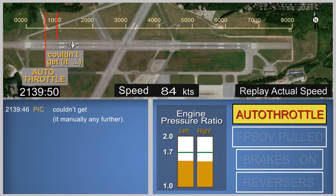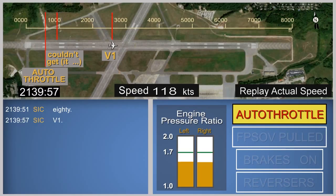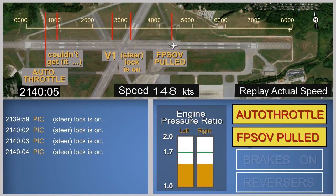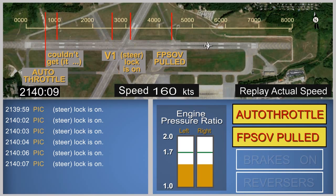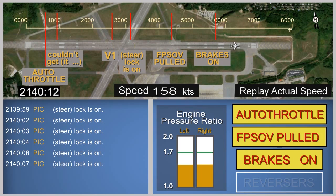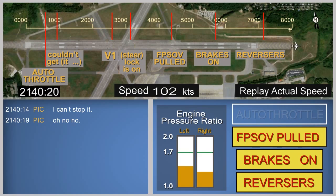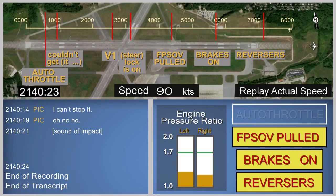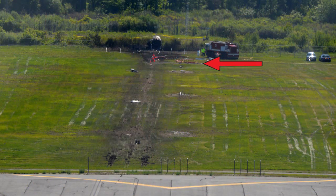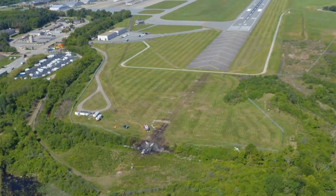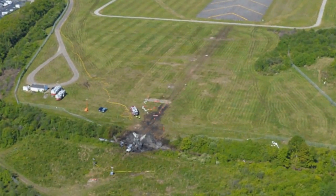The second in command called out that the airplane had reached a speed of 80 knots, then stated the airplane had reached takeoff decision speed, V1. One of the pilots activated the flight power shutoff valve, likely in an attempt to release the gust lock. Brake pressure started to rise and the thrust reversers were deployed. The airplane collided with runway lighting and a localizer antenna, and passed through the airport's perimeter fence before coming to rest in a ravine formed by the Shawsheen River.